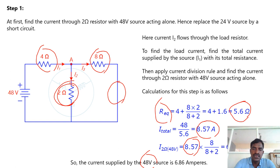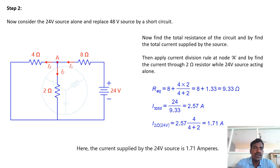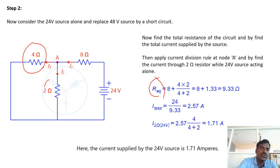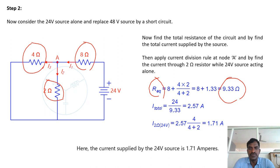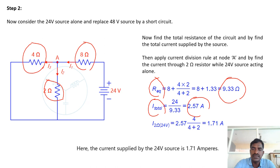Similarly, find the current through the 2 ohm resistor with the 24 volt source acting alone. For R equivalent: the 4 ohm resistor and 2 ohm resistor are in parallel, and that combination is in series with the 8 ohm resistor. Total resistance = 9.33 ohms. Total current = V/R = 24/9.33 = 2.57 amps.